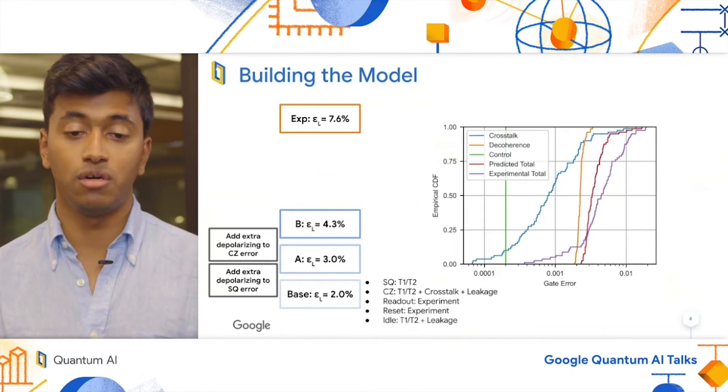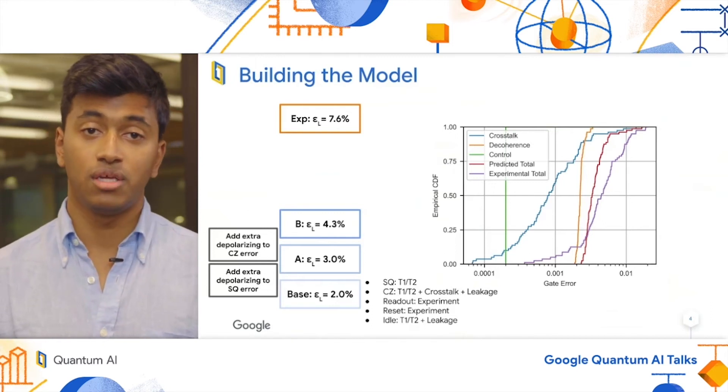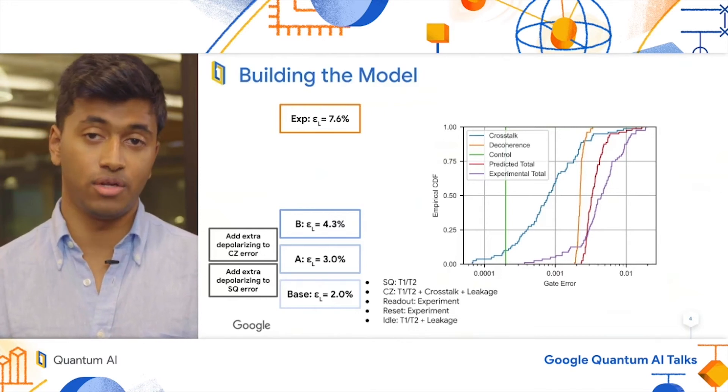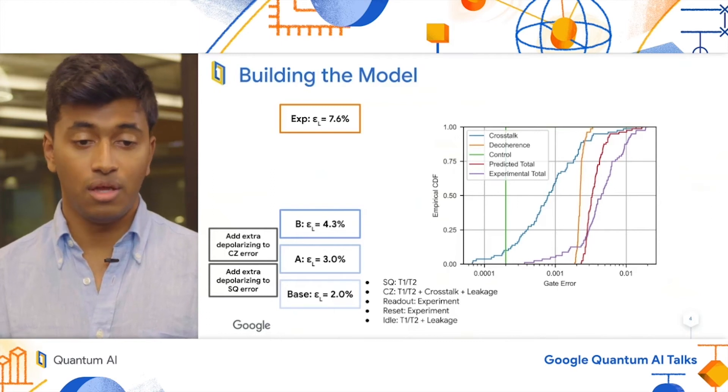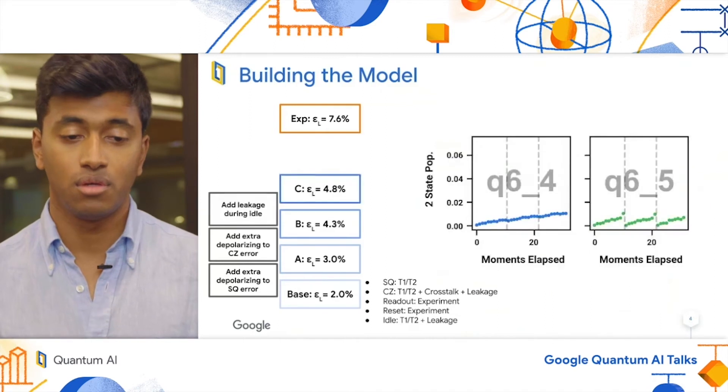The purple curve is the experimental total we see in our experiments. And you can see that for most of the pairs, it exceeds the predicted amount. We again add extra depolarizing error in to bring these two curves together. And this leads to a logical error rate of 4.3%.